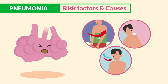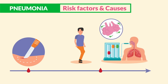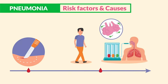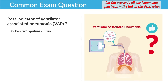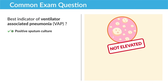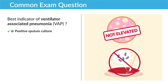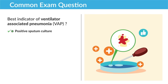That's why we always turn, cough, and deep breathe, use early ambulation after surgery, and use the incentive spirometer to re-expand those closed alveoli. A common exam question asks for the best indicator for VAP — the answer is positive sputum culture. It's not elevated WBCs and not blood cultures; the best indicator for diagnosing VAP is positive sputum culture.